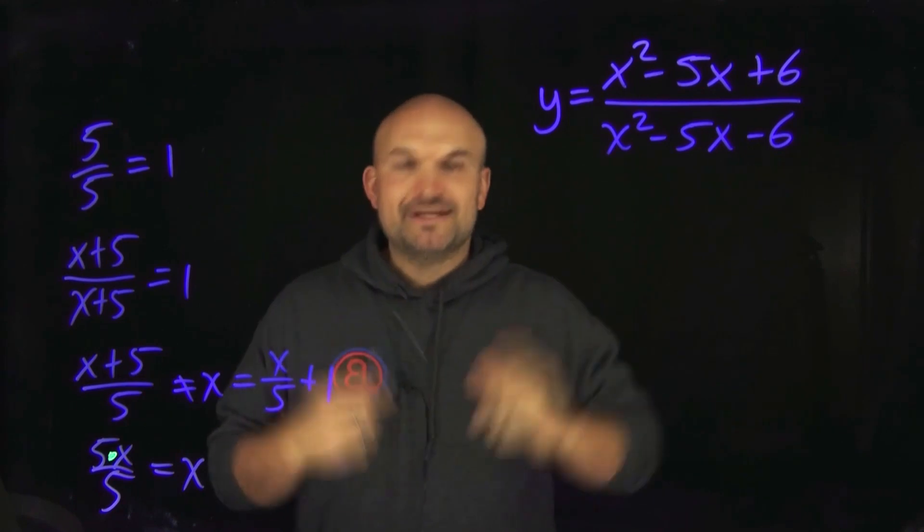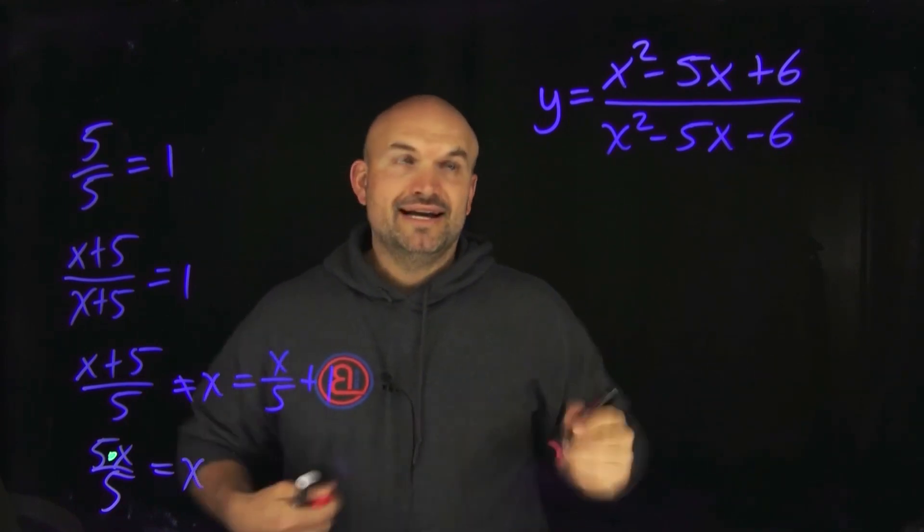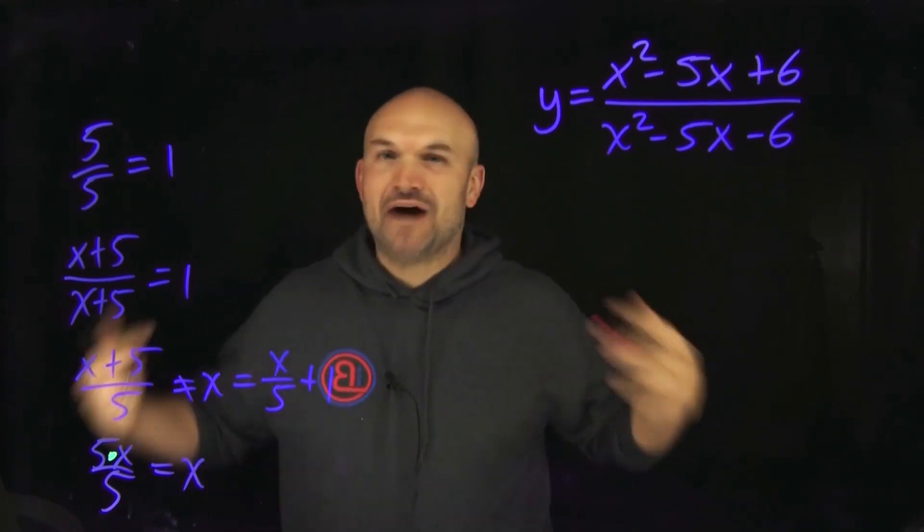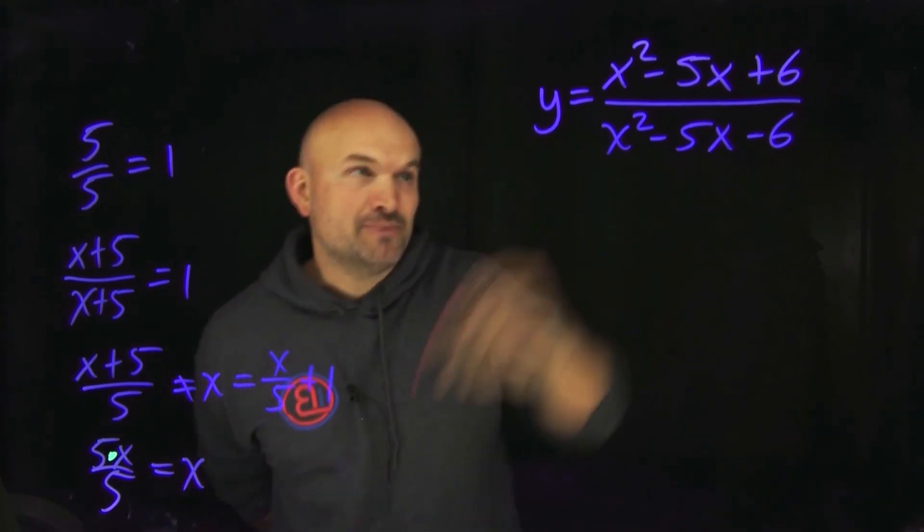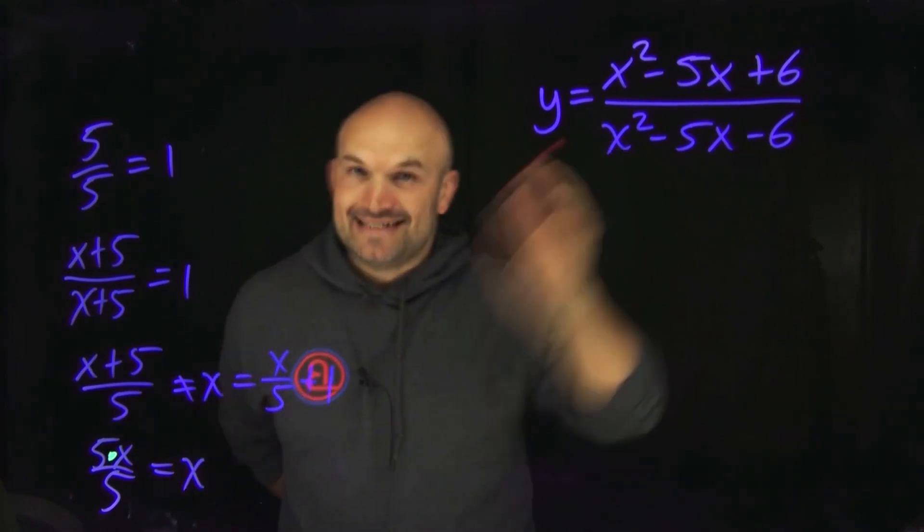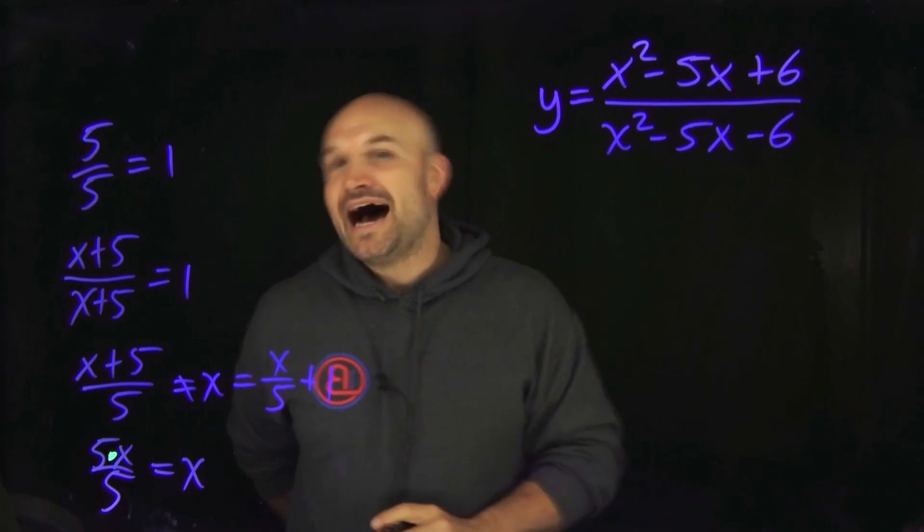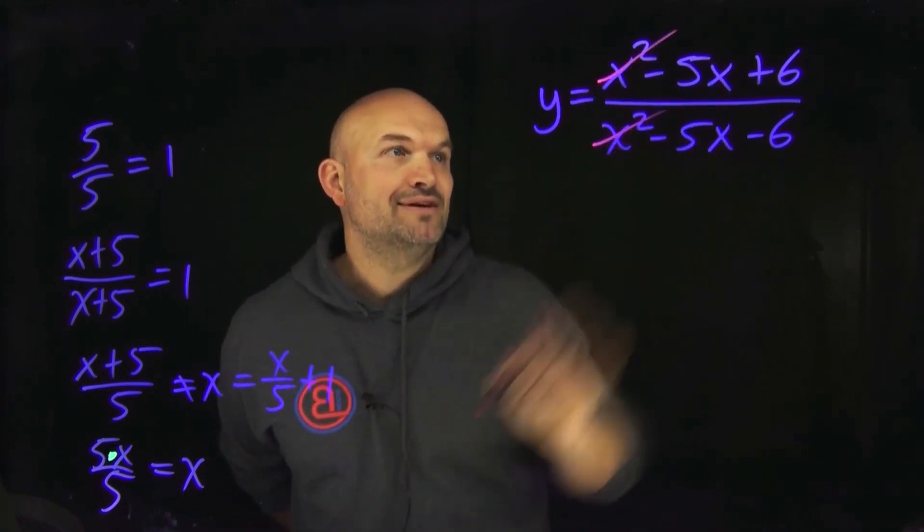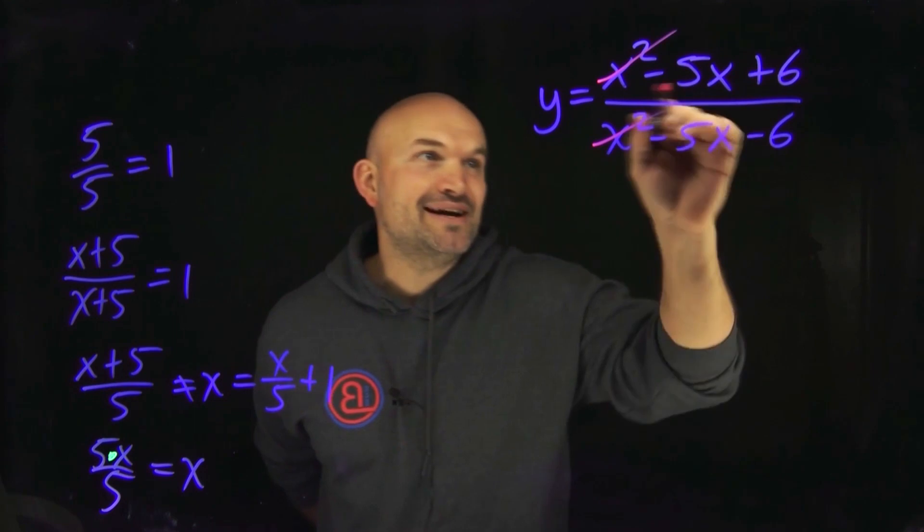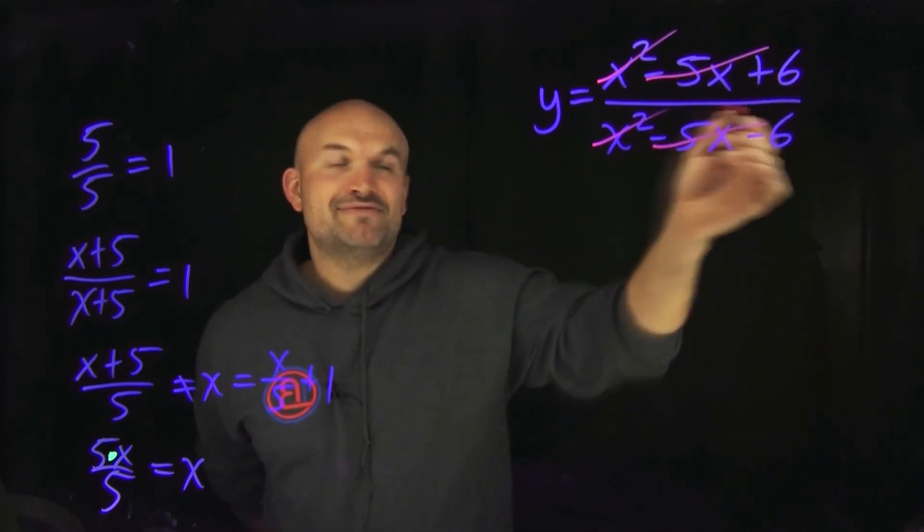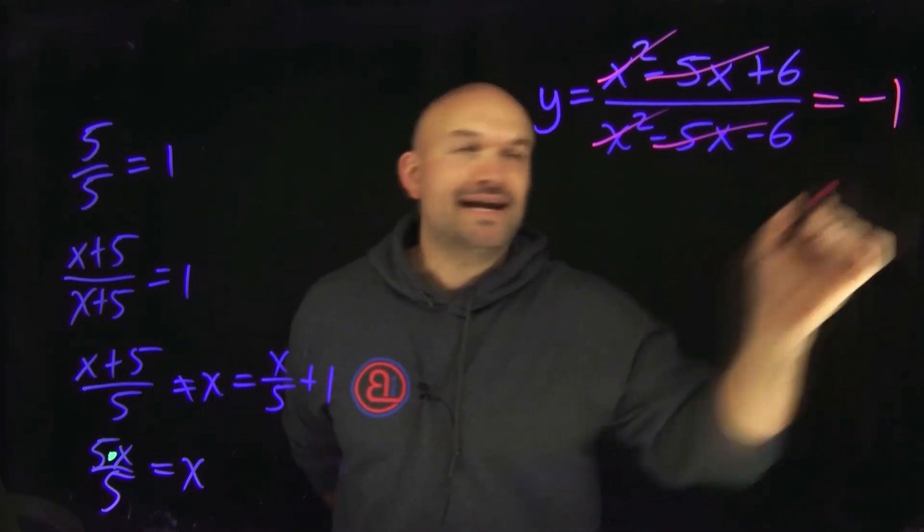So when you look at this problem, the biggest mistake that students will make by far is they get what we call dividing out happy, right? Whatever they see in the numerator and in the denominator that's exactly the same, they just go ahead and say, I'm going to divide out x squared and x squared, negative 5x and negative 5x, positive six divided by negative six. That is equal to a negative one.